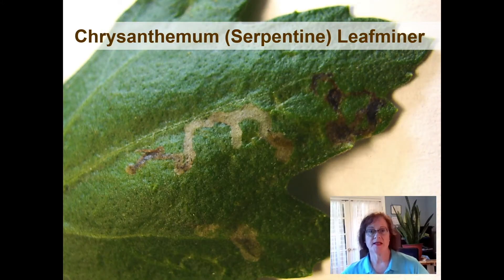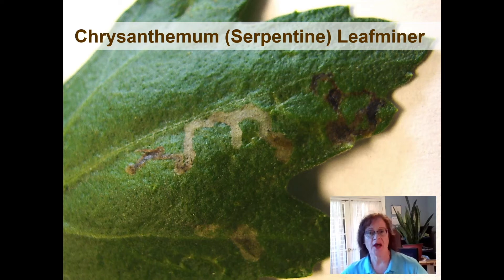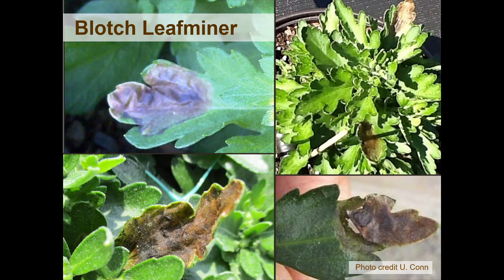Our first pest is leafminer. Here you see the signs that a leafminer has visited your crop. This is a serpentine leafminer — that's the typical leafminer that people recognize on a wide variety of crops. We also see blotch leafminer in chrysanthemum; it forms this large vacant portion of the leaf. Notice how the edges often remain and it has somewhat of a margin often as well, and here we see a whole plant with that effect.